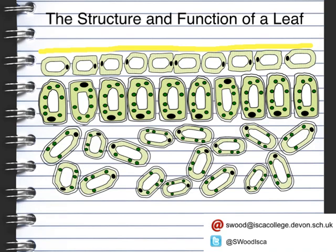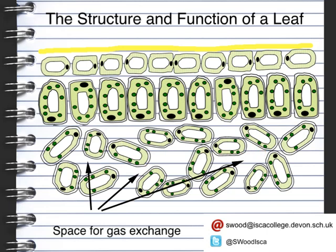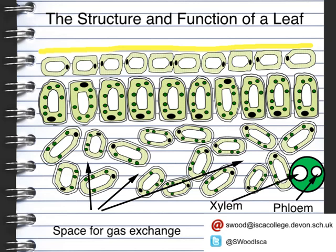The spongy layer contains air spaces, and these spaces allow gas exchange to occur. Also within the spongy layer you have a vascular bundle, which contains two structures: xylem and phloem. The xylem is the tube that carries water around the plant, transporting water from the roots to allow photosynthesis to happen. The phloem transports or relocates the sugars made from photosynthesis to where they are needed around the plant.